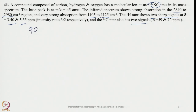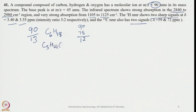First, take 90 divided by 13 — we get 6 remainder 12, giving C6H18. Since oxygen is present, let us remove one oxygen — that requires removing CH4 equivalent (12 + 16), so it becomes C5H14O. Let us try to remove one more oxygen: we get C4H10O2.